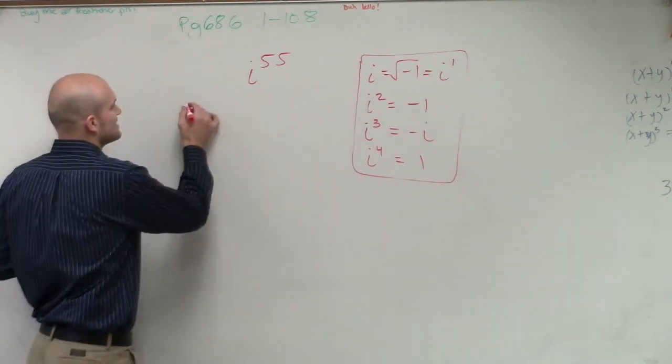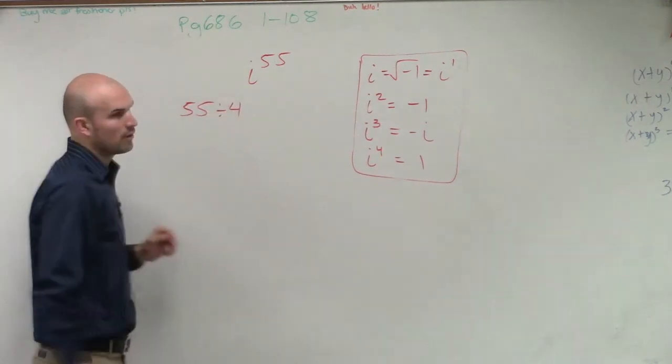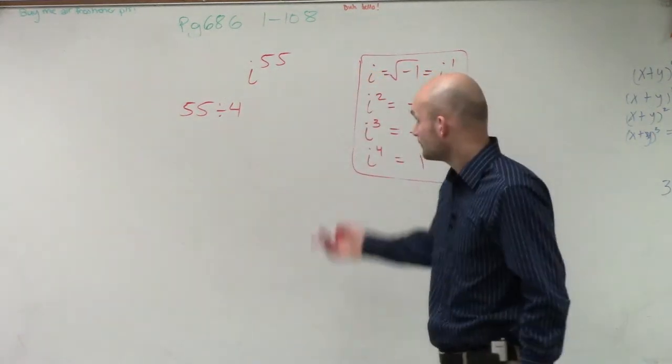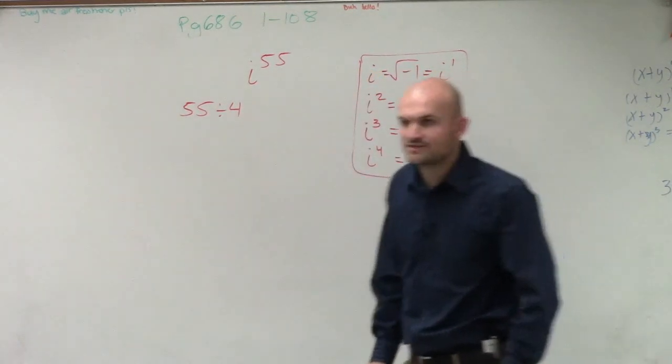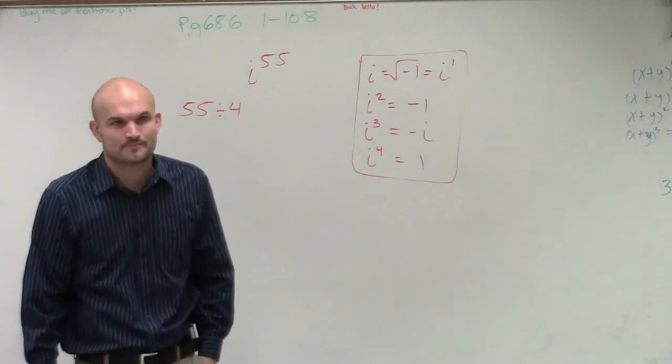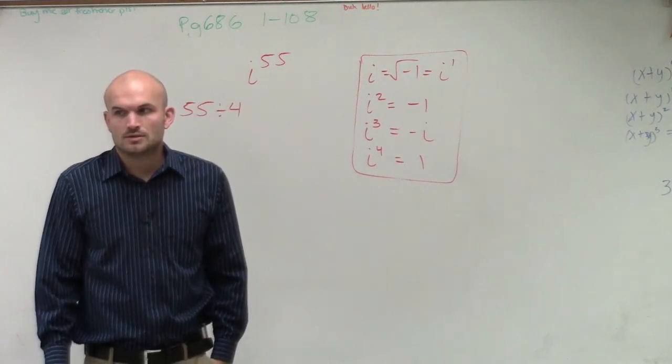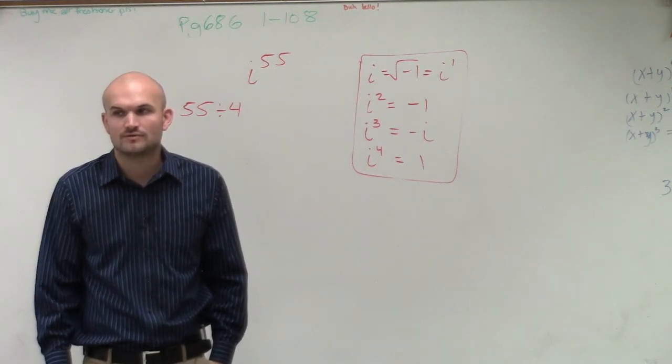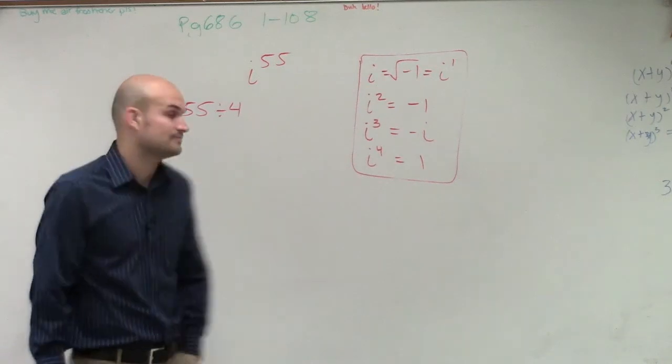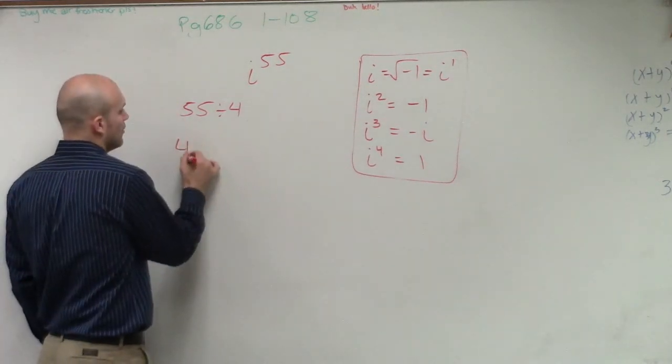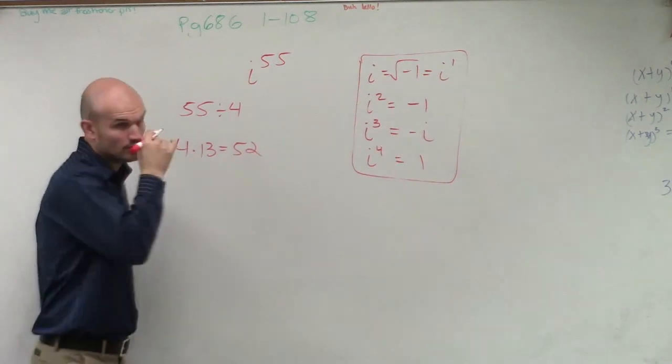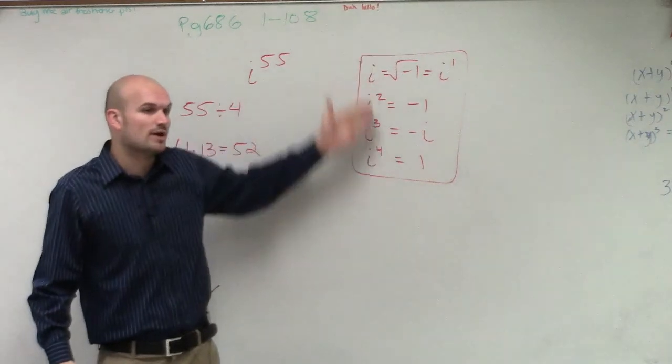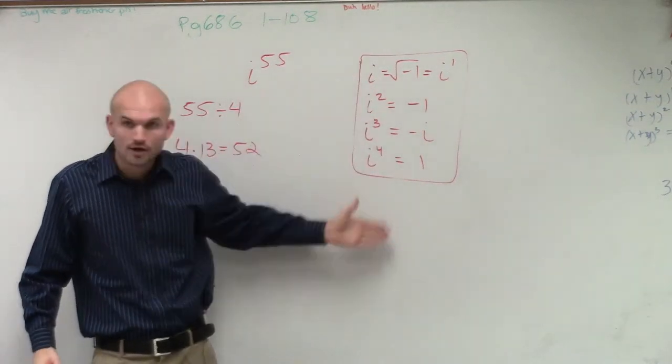So what we're going to do is I'm going to say, all right, 55 divided by 4, because 4 is going to represent how many times it's going to take for it to repeat. So we say, all right, 4 divides into 55 how many times? 13 would be 12, right? So it would be 52. So you could say 4 times 13 equals 52, right? So therefore, you could say there has been 13 repetitions. That means I go through this cycle 13 times.